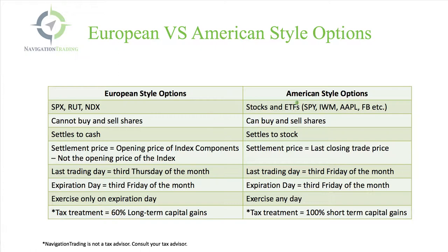On the American style side, you still have SPY and IWM, for example, which are ETFs that track those indices. However, they are not the specific index — they just simply track them. All stocks and ETFs — SPY, IWM, Apple, Facebook, et cetera — these are all American style options.